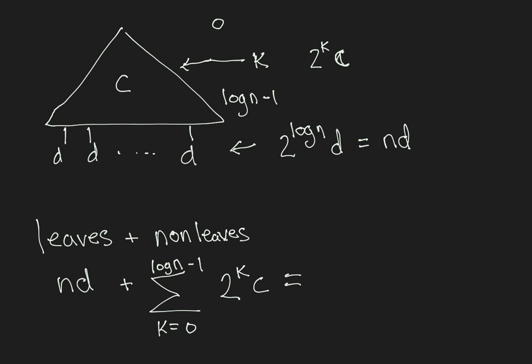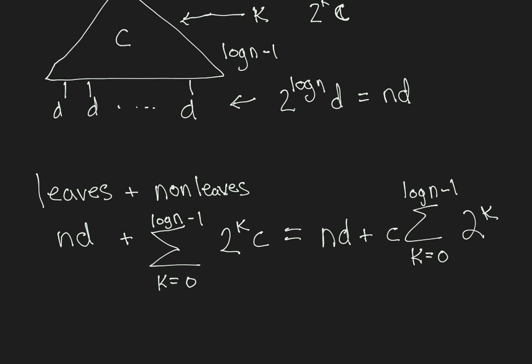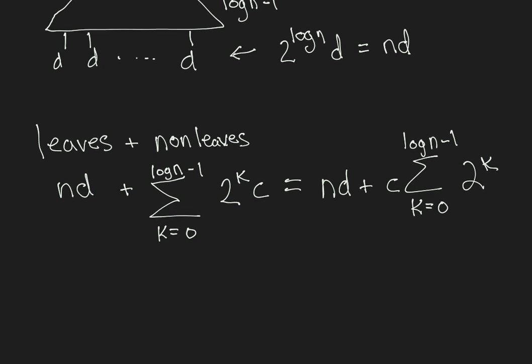Well, this is easy. We can rewrite that by factoring the c out. And now you should recognize a geometric series with ratio 2.